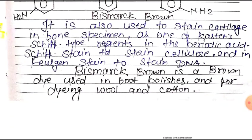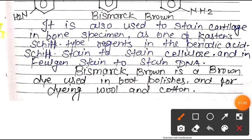It is used to stain cartilage in bone, as one of Kasten's Schiff-type reagents in the periodic acid Schiff stain, to stain cellulose, and in Feulgen stain to stain DNA. Bismarck brown is also a brown dye used in boot polish and for dyeing wool and cotton.